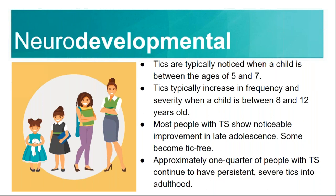Approximately one quarter of people with Tourette syndrome will continue to have persistent, even severe tics into adulthood. I like to say that tics are typically noticed when a child is between the ages of five and seven. As we progress through the 21st century, there just is more knowledge about Tourette syndrome. Obviously we all know there are plenty of people who don't know what Tourette syndrome is when they become introduced to us or our family.